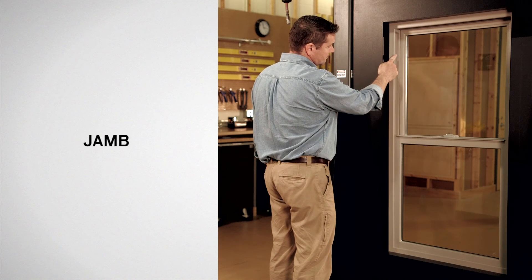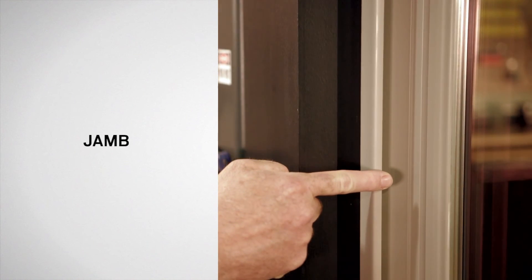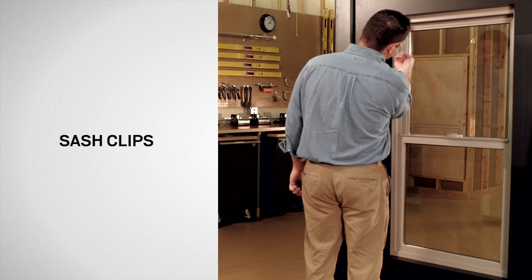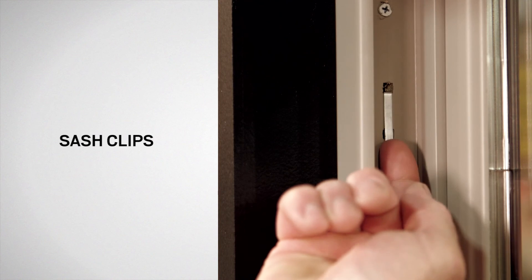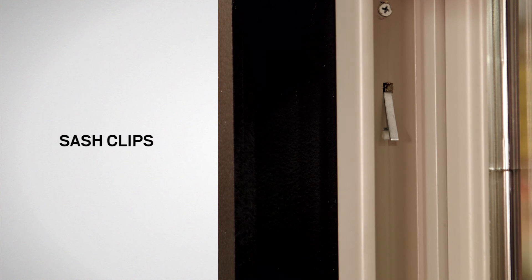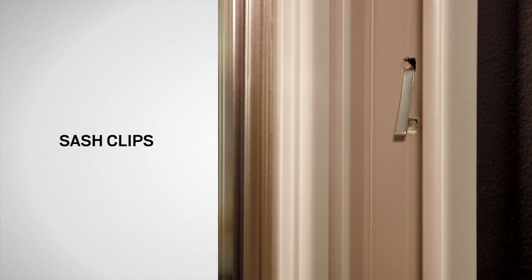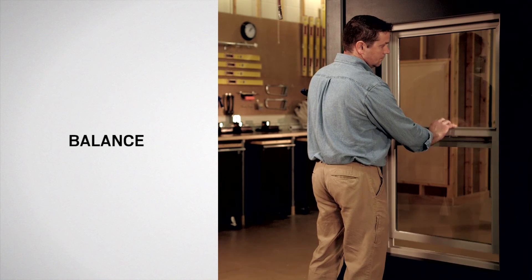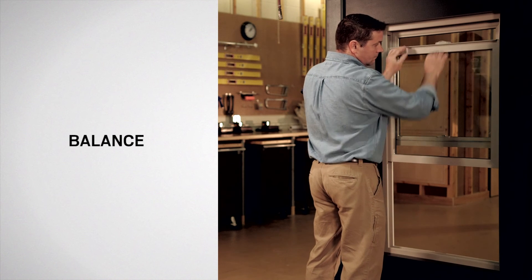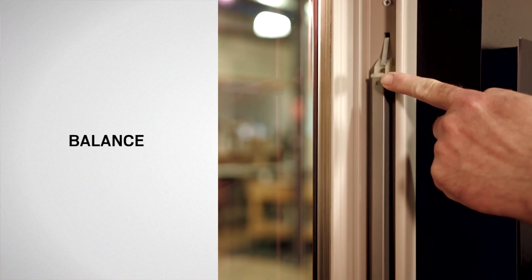The bottom sash slides in a channel located in the side jamb. In the side jamb are sash clips which extend to catch the balance. A spring-loaded balance, which assists in raising or lowering the sash, is also located within each side jamb.